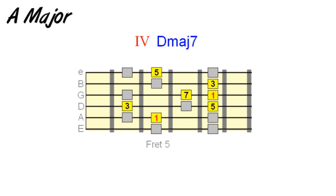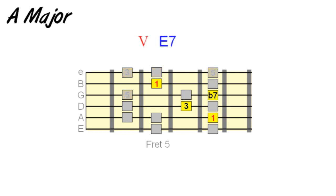So, to the next degree. Remember, all we're doing here is pushing these interval blocks along to their next note in the scale to get the next degree's chord tones: E7 as our five or dominant chord. Again, you can pick out a few chord shapes here, but the most common is shown here.